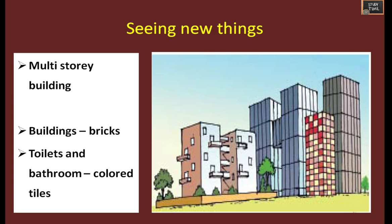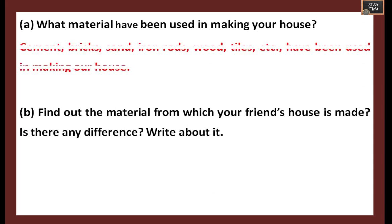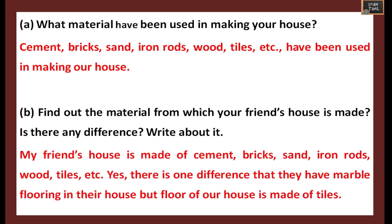What materials have been used in making your house? Cement, bricks, sand, iron rods, wood, tiles, etc. have been used in making our house. Find out what material your friend's house is made of - is there any difference? Some might have different flooring or different types of structure; you can write about those differences.